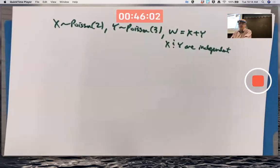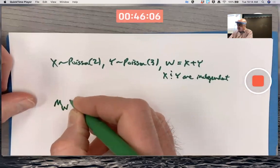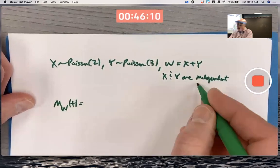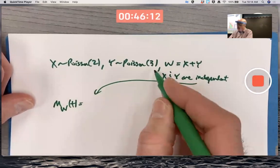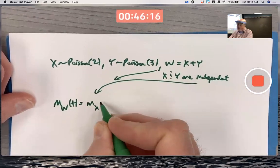So that would be true here. The moment generating function for W, by independence, is going to be, and since W is the sum, is going to be the product of the moment generating functions for X and Y.